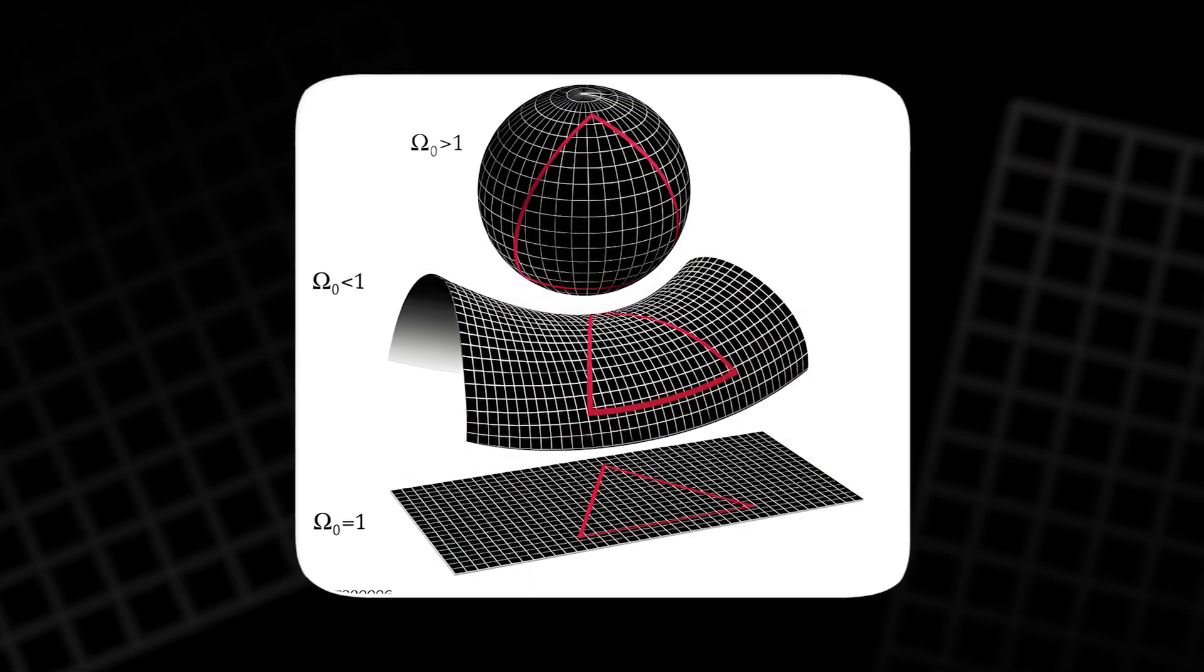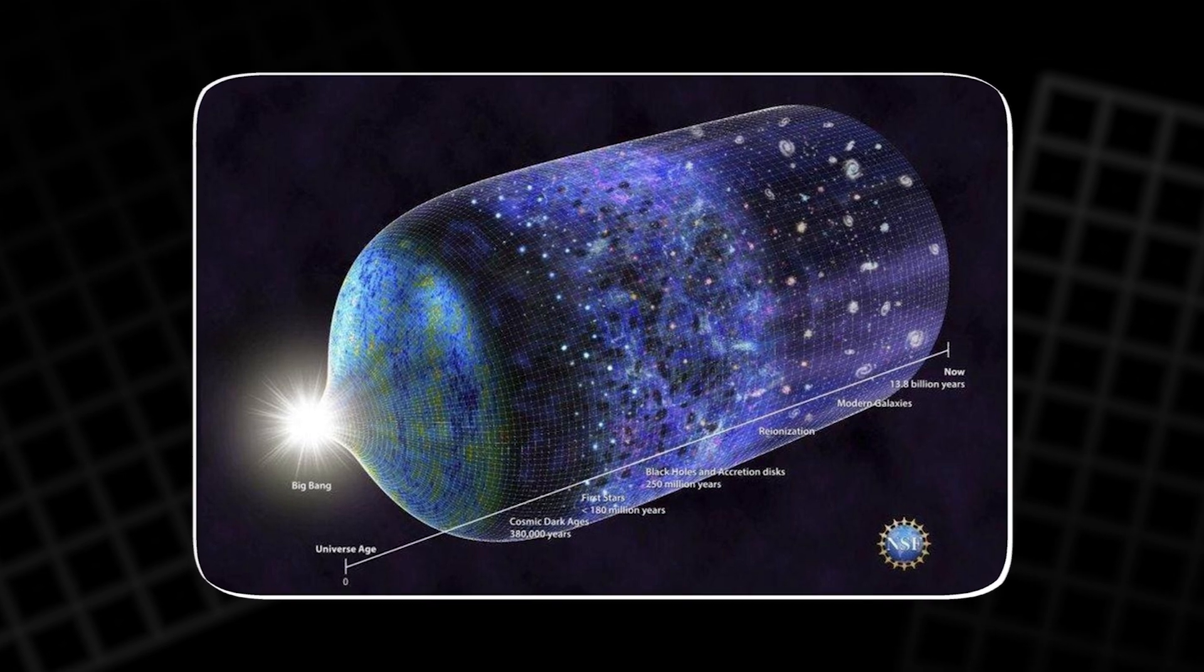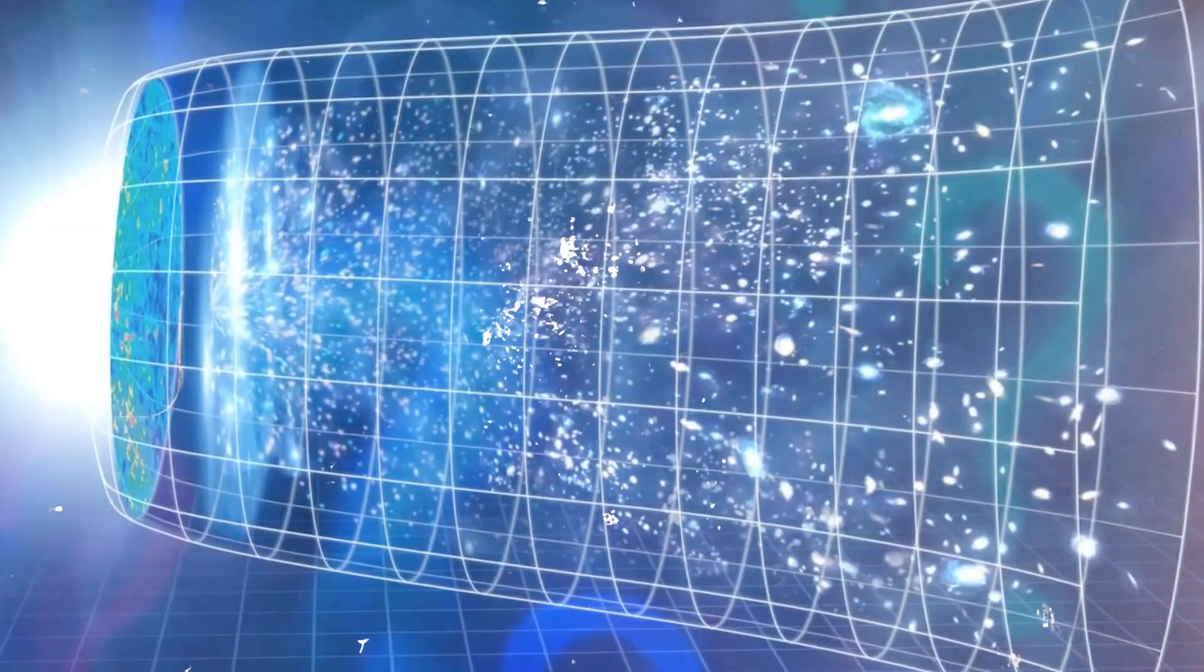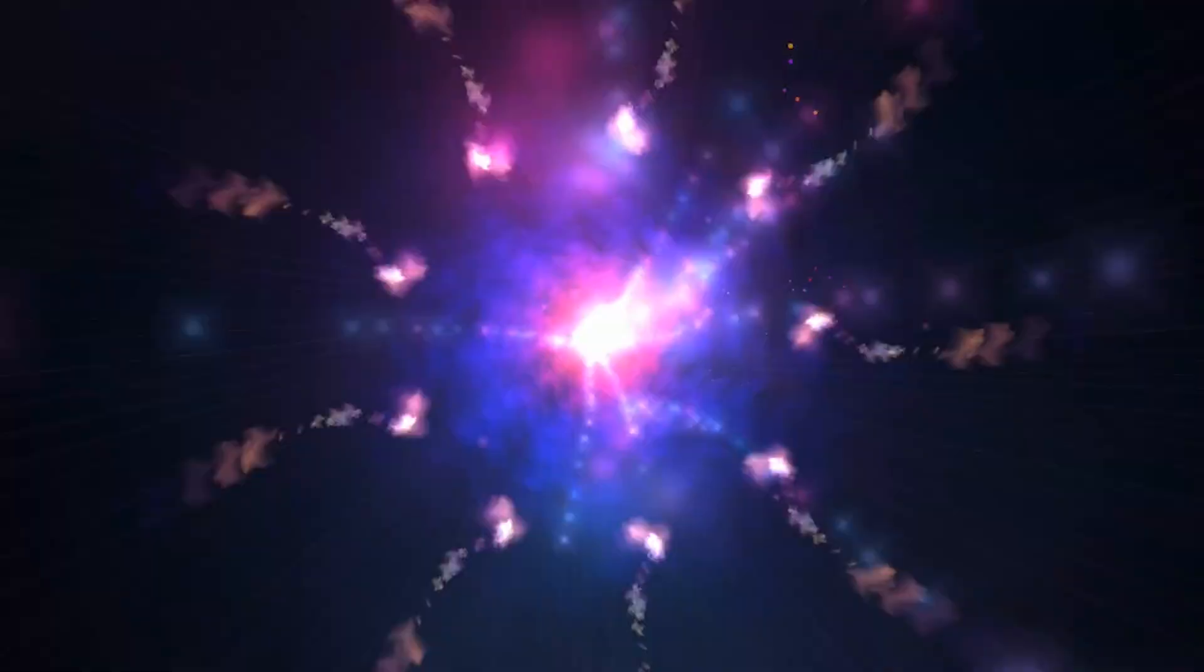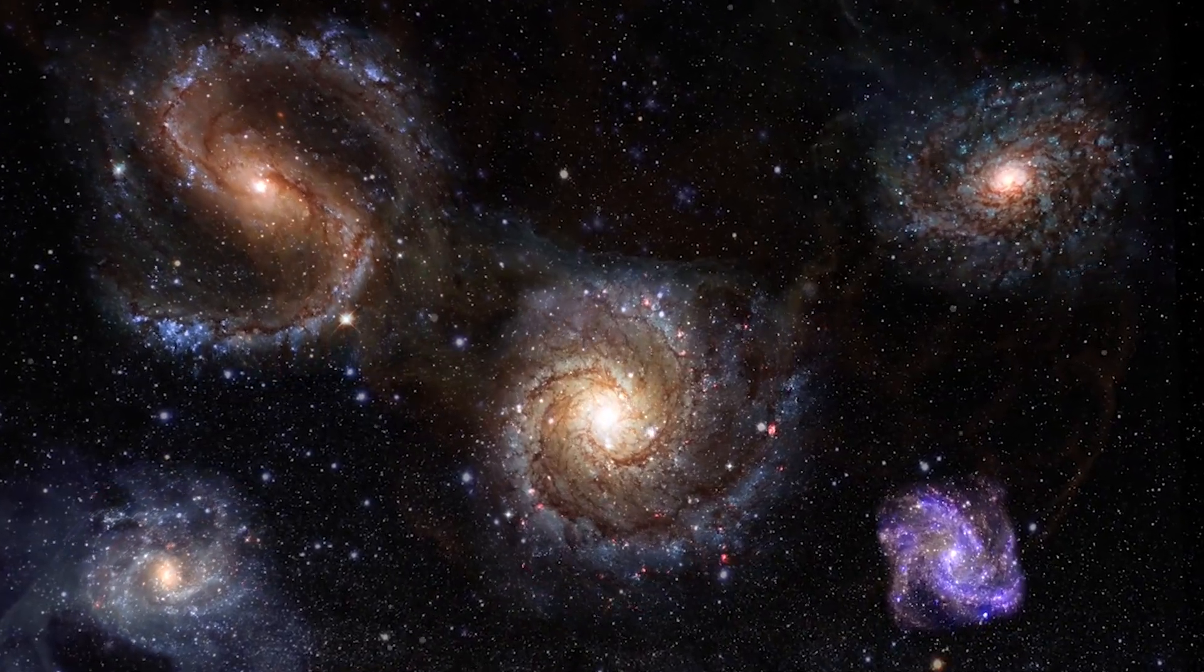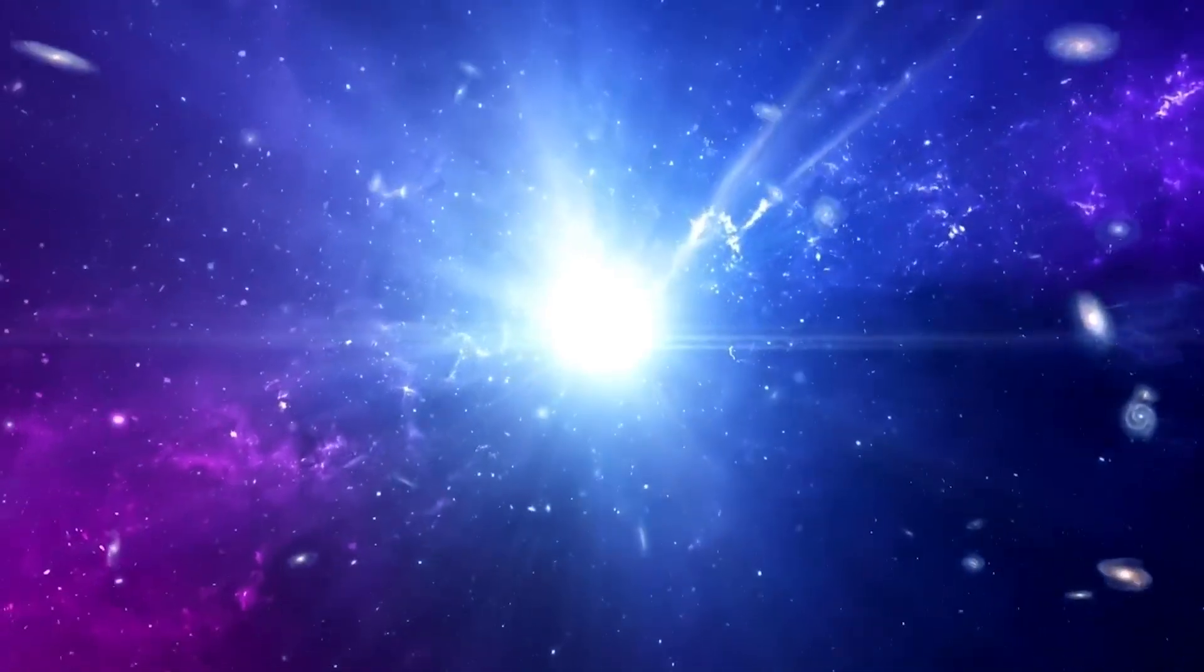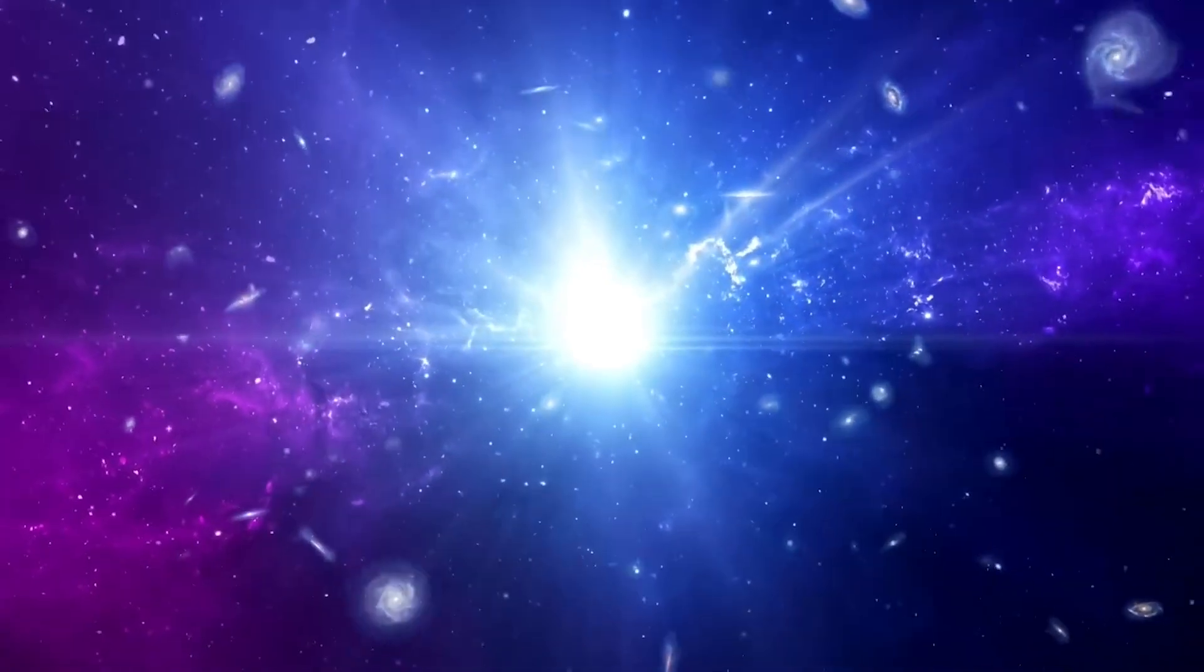The second problem was flatness. Space can curve like a sphere or a saddle. But our universe is extremely flat. Almost perfectly so. But a flat universe is like a pencil balanced on its tip. It should quickly drift toward collapse or rapid expansion. The fact that it is still exactly flat is almost impossible without something forcing it.